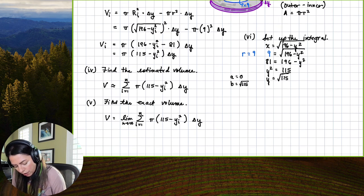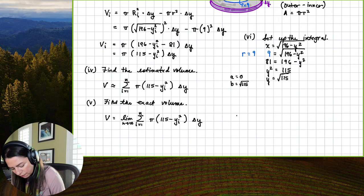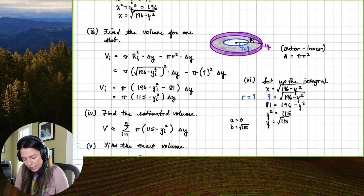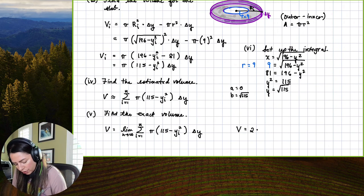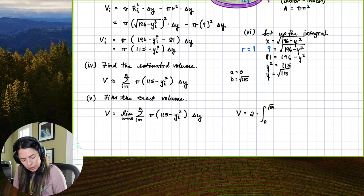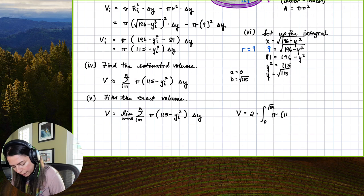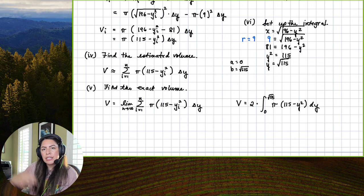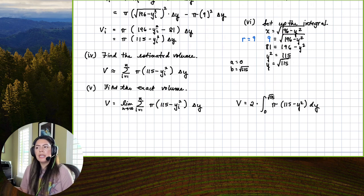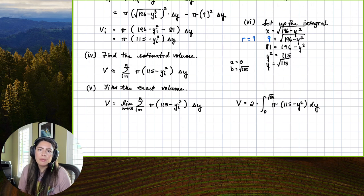Setting up the integral: the volume equals 2 times the integral from 0 to √115 of π·(115 − y²) dy. It seemed like a lot of work to set up the estimation and summation, but setting up the integral is much quicker from there, and now we can integrate to find the volume of the region.